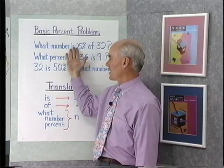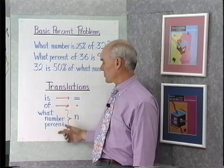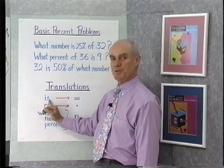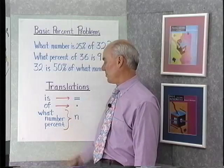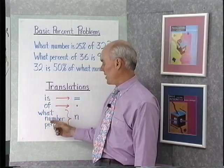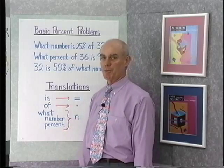Now we're going to take a sentence like this and translate it into an equation and solve it. The translations we use are: 'is' will translate into equal, the word 'of' always translates into multiply, and if we say what number or what percent, we're going to let that be n or x or whatever variable you would like.